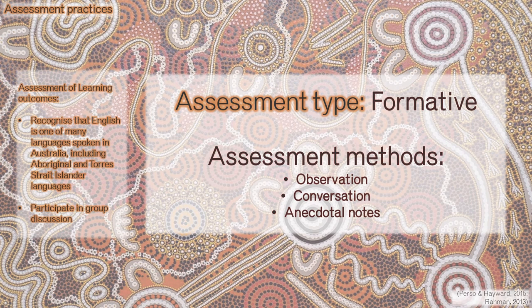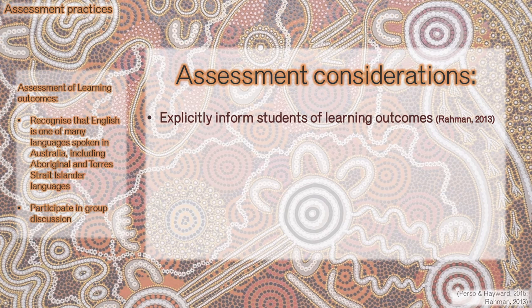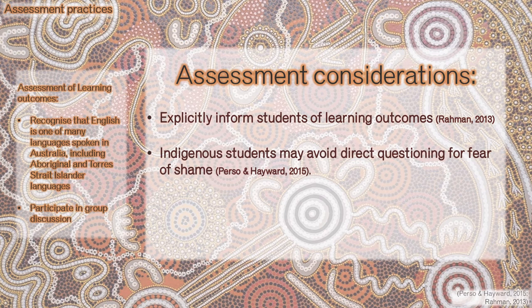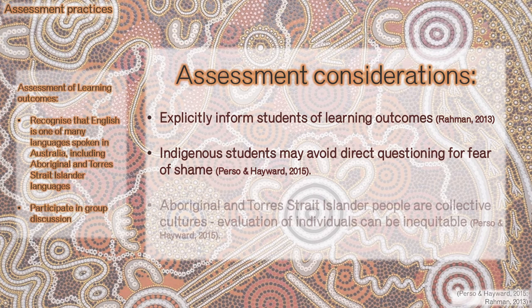Assessment of learning outcomes would occur as formative observations during yarning circles and literacy activities. I would collect anecdotal notes of behaviors such as engagement, participation, and adherence to protocol. Targeted questioning would indicate understanding of indigenous languages. Assessment considerations include: explicitly informing students of learning outcomes so they are aware of what is expected; acknowledging that indigenous students may avoid answering direct questions for fear of shame, therefore gathering observations discreetly; and understanding that Aboriginal and Torres Strait Islander peoples are collective cultures, so evaluation of individual work may be deemed inequitable — assess students in their preferred composition.